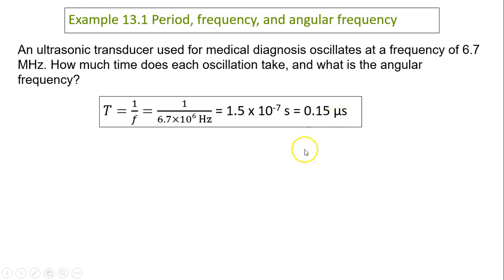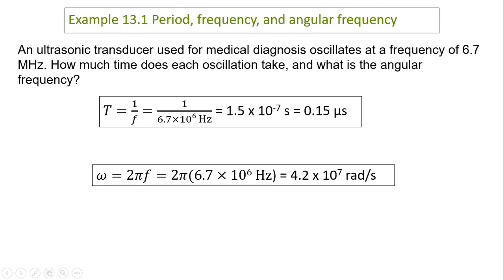That's why it's 0.15 microseconds. The other one is omega equals 2πf. So that gives you 2π times f, 4.2 times 10 to the 7 radian per second. That's the unit for angular frequency.